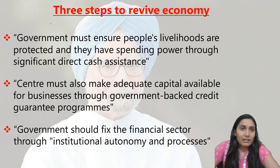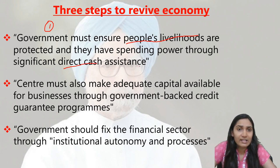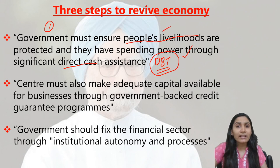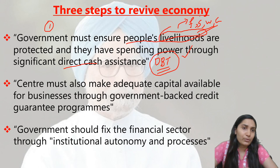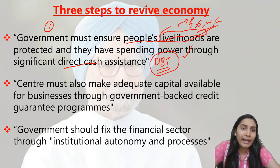The first step Manmohan Singh suggested: the government must ensure people's livelihoods are protected and that they have spending power through significant direct cash assistance — essentially DBT, direct benefit transfer or direct cash transfer to beneficiaries' accounts. Livelihood refers to basic necessities like food, shelter, water, and clothing. The government must ensure people have a source of income and the spending power to sustain themselves.